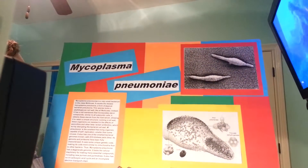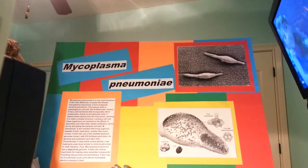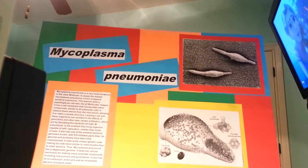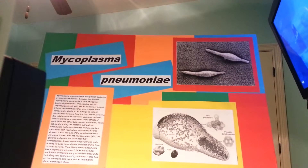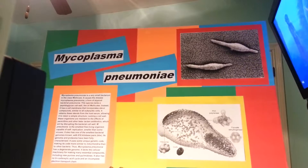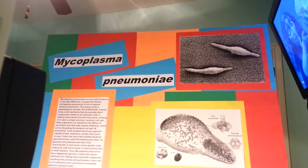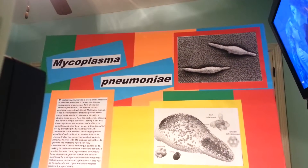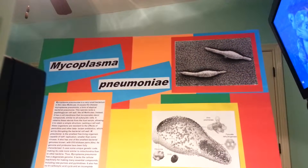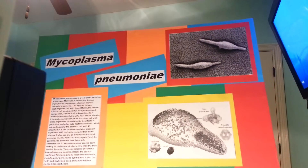Mycoplasma pneumoniae is a very small bacterium in the class Mollicutes. It causes the disease Mycoplasma pneumonia, a form of atypical bacterial pneumonia. This species lacks a peptidoglycan cell wall, like all Mollicutes. Instead, it has a cell membrane that incorporates sterol compounds similar to all eukaryotic cells. It obtains these sterols from the host serum, allowing it to retain a simple structure. Lacking a cell wall, these organisms are resistant to the effects of penicillins and other beta-lactam antibiotics, which act by disrupting the bacterial cell wall.